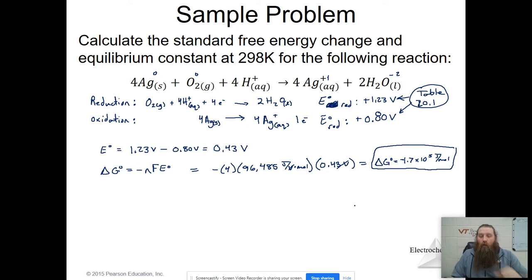So my delta G prime is going to be negative 1.7 times 10 to the 5th joules per mole. So there's the first thing it asked me to find, there's delta G. And delta G is negative, so we know this is a spontaneous reaction. And that makes sense because we've got a positive number for our E prime. That's a good thing.